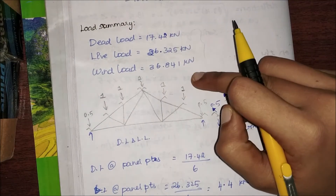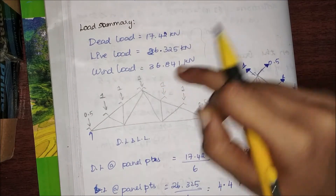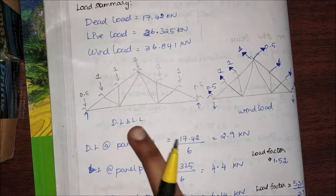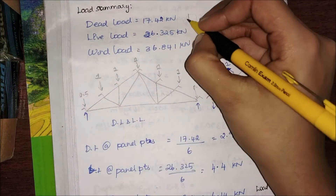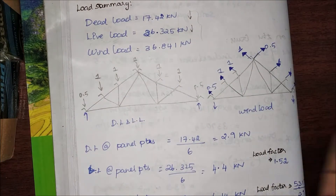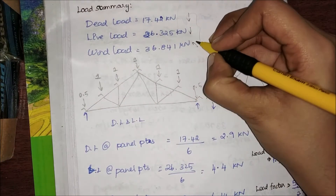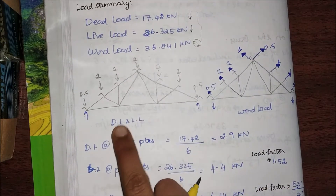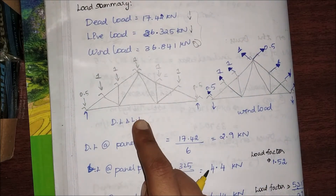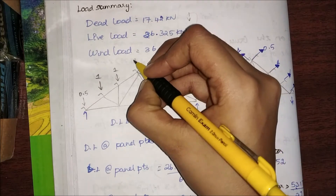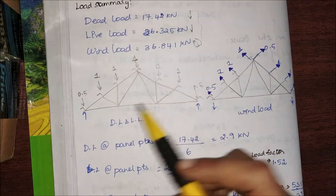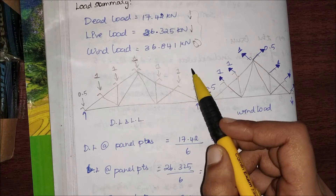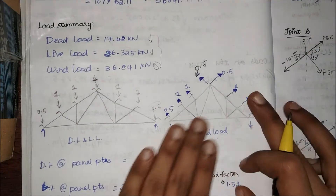Now I have to place all these dead load, live load, and wind load in such a way that they will act all over my truss members. Coming to dead load and live load, they have vertical loads — no problem. Whereas my wind load acts away from the rafter, it is in that direction. Coming to dead load and live load, if my dead load is taken as one kilo newton, at the end points the load intensity will always be half of the other panel points.